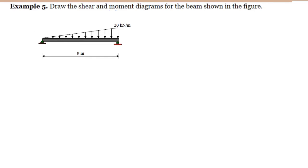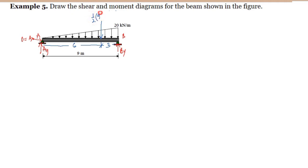At point A we have two reactions: Ay and Ax, but in this case Ax is equal to zero. At point B we have By. For this loading condition, the resultant of the load can be found at one-third and two-thirds — so one-third of nine from point B is three, and two-thirds of nine from point A is six. The magnitude of the resultant is the area of the load diagram: one-half times nine times twenty, giving ninety kilonewtons.